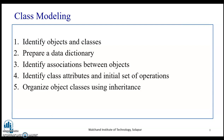When we talk about class modeling, the first step — as the name suggests — is to identify the objects and the classes. How do you identify the classes and objects? You start by preparing a data dictionary. A data dictionary basically consists of the objects, people, and things that define the system or are present in the problem description. Prepare a data dictionary from the given problem statement.